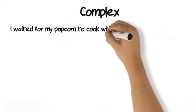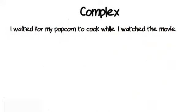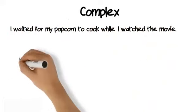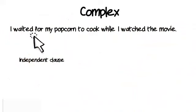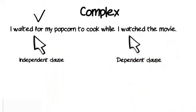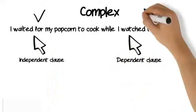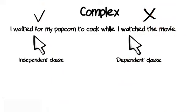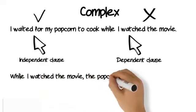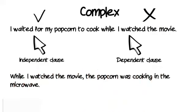Have a look at this example: 'I waited for my popcorn to cook while I watched the movie.' The first clause is the independent clause because it makes complete sense on its own. The second clause is the dependent one because 'while I watched the movie' makes no sense on its own and relies on the other to make sense. You can also switch them around and have the dependent clause first, like: 'While I watched the movie, the popcorn was cooking in the microwave.'